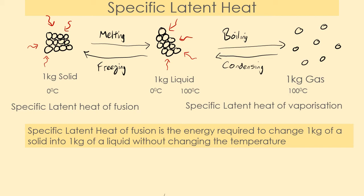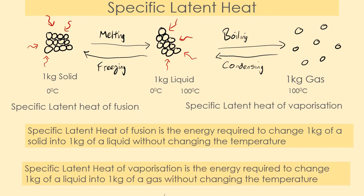So we've got two specific latent heats here: one of fusion, which covers melting or freezing, and one of vaporization, which covers boiling or condensing. The specific latent heat of vaporization is the energy required to change one kilogram of a liquid into one kilogram of a gas without changing the temperature — and also turning one kilogram of a gas into one kilogram of a liquid without changing temperature. It all depends on whether energy is going in or out as to what happens to the state of matter.